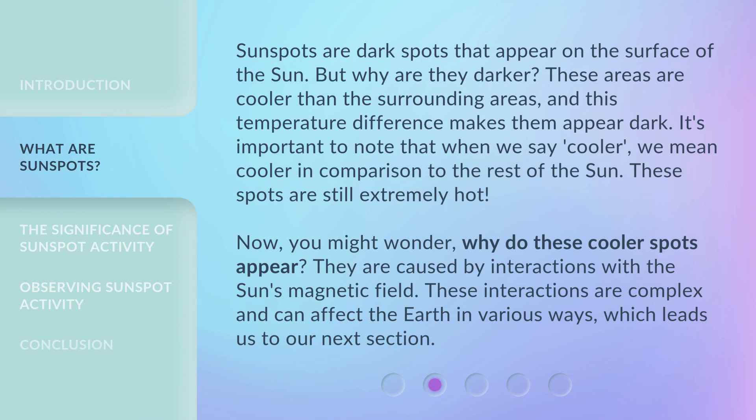Sunspots are dark spots that appear on the surface of the sun. But why are they darker? These areas are cooler than the surrounding areas, and this temperature difference makes them appear dark. It's important to note that when we say cooler, we mean cooler in comparison to the rest of the sun — these spots are still extremely hot. Now, you might wonder, why do these cooler spots appear? They are caused by interactions with the sun's magnetic field. These interactions are complex and can affect the earth in various ways, which leads us to our next section.